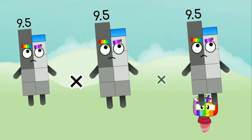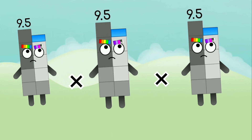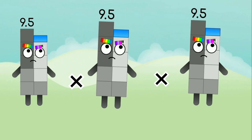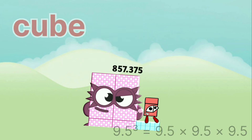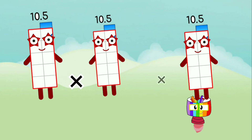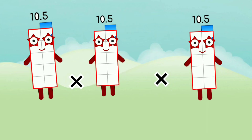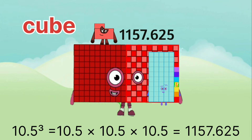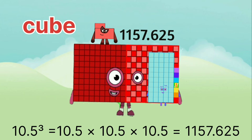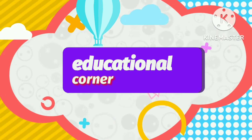9.5 x 9.5 x 9.5 equals 857.375. 10.5 x 10.5 x 10.5 equals 1157.625. Hope you like the video.